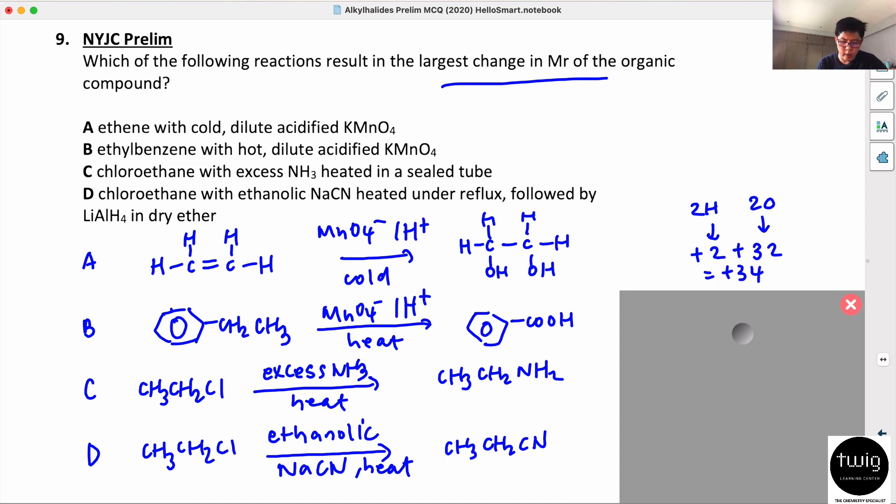For the second one, you're taking away 4H and adding 2O. So you took away 4H and added 2O. The overall change is plus 28.